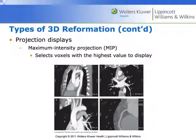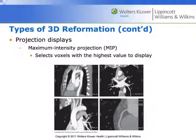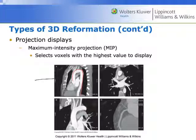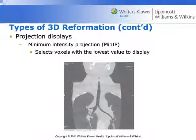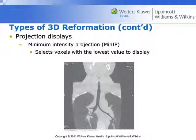MIPs — maximum intensity projections — are an interesting way of thinking about three-dimensional data. The computer has gone through and selected the voxels with the highest value to display throughout the 3D volume. For example, we have clear views of the aorta on these images, including an oblique view showing the entire aorta in a single view as a MIP. MinIPs — minimum intensity projections — are largely only used when viewing the lungs or the trachea, and now it selects the voxels with the lowest value to display, so we can clearly see the trachea and both lungs.